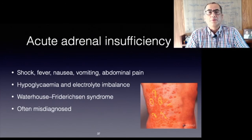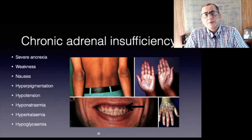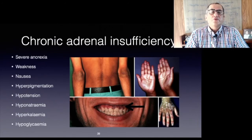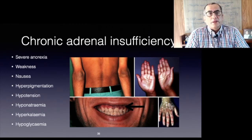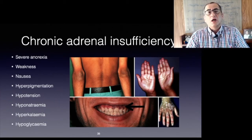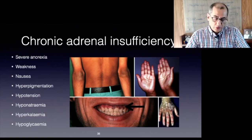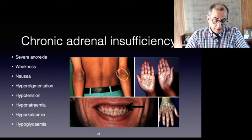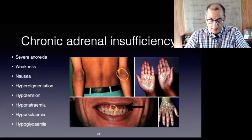Because of intestinal symptoms and fever, the Addisonian crisis is often misdiagnosed as an acute abdominal condition. When symptoms develop over time, patients present with severe anorexia, weakness, and nausea. As a result of negative feedback, ACTH and pro-opiomelanocortin levels increase, causing hyperpigmentation of the skin and mucosa. Hypotension, hyponatremia, hyperkalemia, and hypoglycemia are commonly observed.